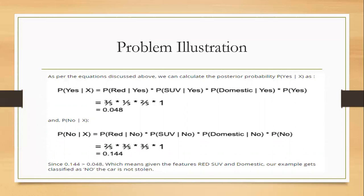So P of yes given X. And here, we have the probability of a red car. I want to reiterate that for the Xs, we are substituting all of the attributes that we have. So first attribute, we have the probability of a red vehicle being stolen. And then the second one is probability of an SUV being stolen.